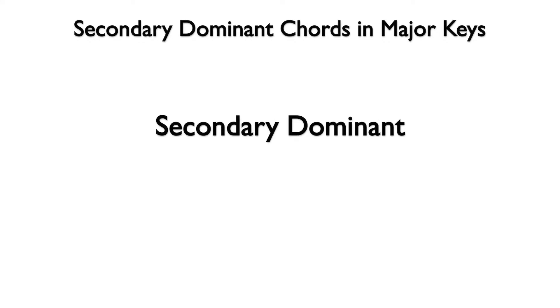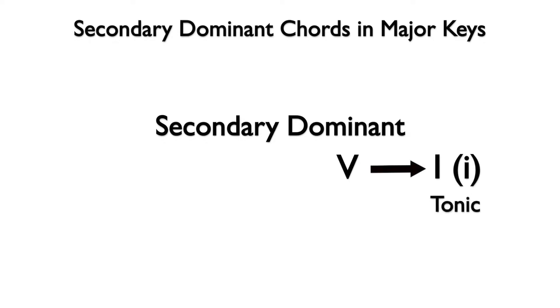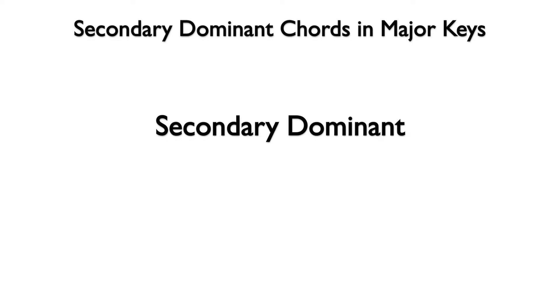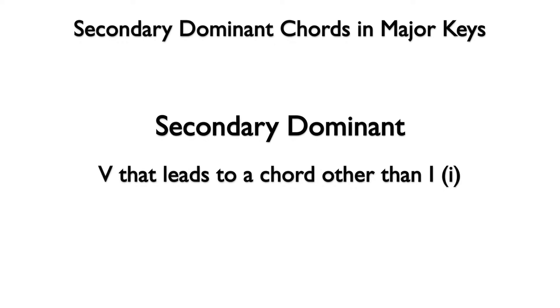Let's define the term secondary dominant. The word dominant refers to the five chord in a major or minor key. The role of a dominant chord is to pull back to the one chord, also known as the tonic chord, and make it feel like it is the home chord of the key. The word secondary refers to a dominant chord that is not five in the key. Five is also known as the primary dominant. Therefore, a secondary dominant chord is a five that leads to a chord other than one in a major or minor key.